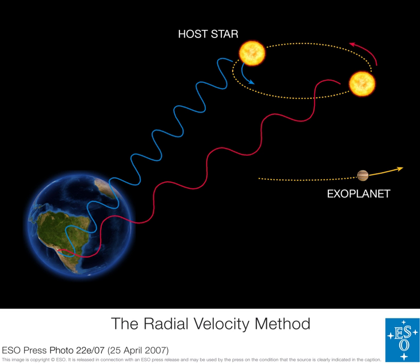The radial velocity method to detect exoplanets is based on the detection of variations in the velocity of the central star, due to the changing direction of the gravitational pull from an exoplanet as it orbits the star. When the star moves towards us, its spectrum is blueshifted, while it is redshifted when it moves away from us. By regularly looking at the spectrum of a star and measuring its velocity, it can be determined if it moves periodically due to the influence of an exoplanet companion.